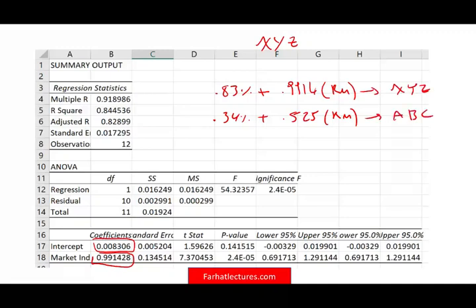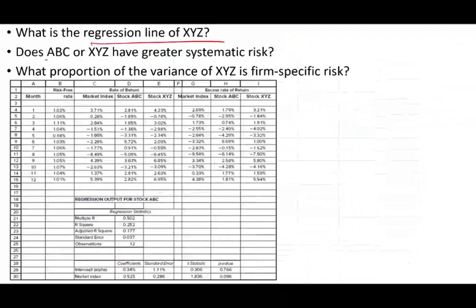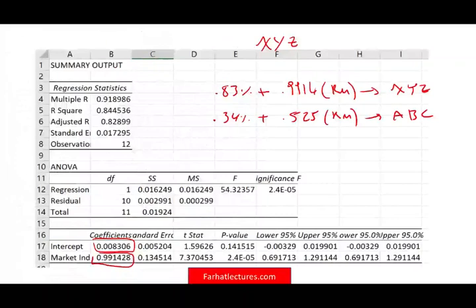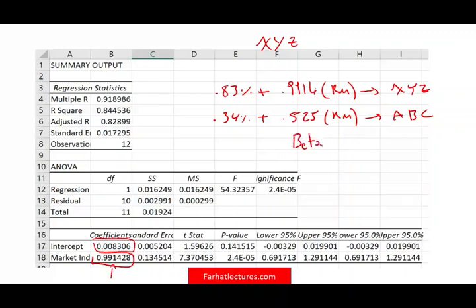Now we are ready to compare and answer the question. The question is, does ABC or XYZ have a greater systematic risk? Which one has a greater systematic risk? Simply put, which one has more market risk? Well, which one will move more with the market?